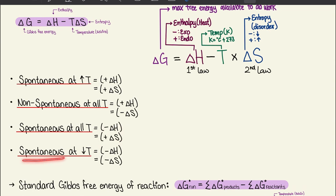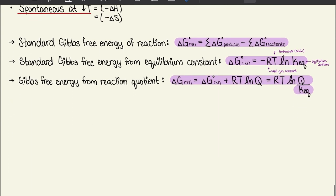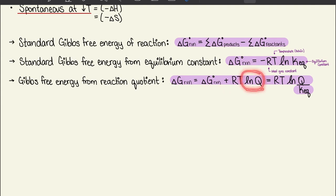For the standard Gibbs free energy of a reaction: ΔG_reaction = Σ(ΔG products) - Σ(ΔG reactants). For the equilibrium constant relationship: ΔG_reaction = -RT ln(K_eq), where R is the ideal gas constant, T is temperature in Kelvin, and K_eq is the equilibrium constant. For the reaction quotient: ΔG_reaction = ΔG° + RT ln(Q), which simplifies to RT ln(Q / K_eq). That's the end of Chapter 7 — see you for Chapter 8!